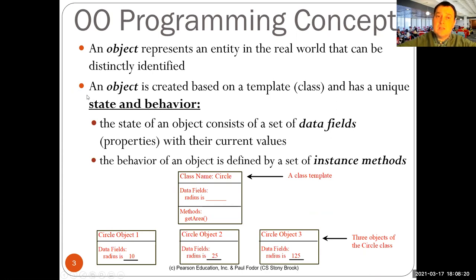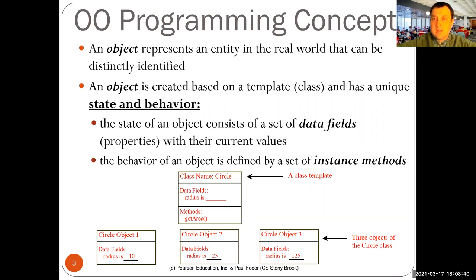The state is the set of all the values for its data fields. The data fields or the properties are individual components of the state of the object. So when we define a circle class, a circle has a radius, maybe has a color — these are data fields. And the set of all those key-value pairs — the name of the data field and the value — is the state of the object.